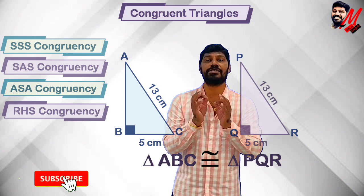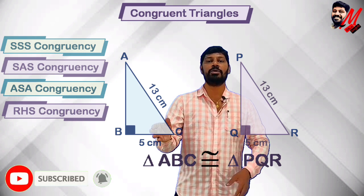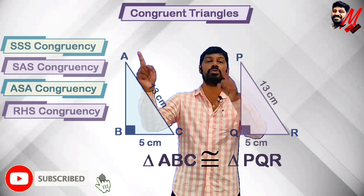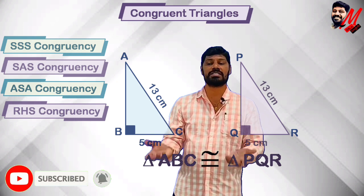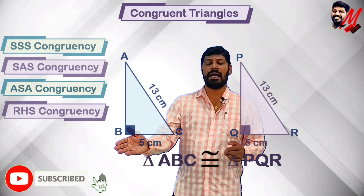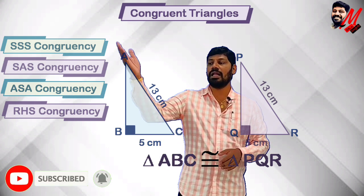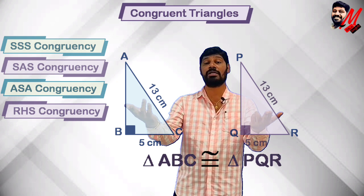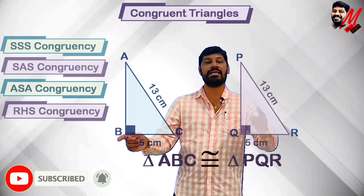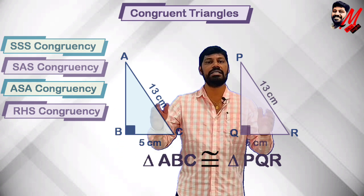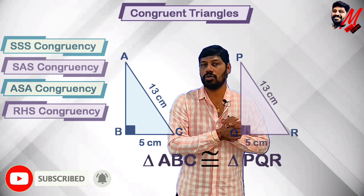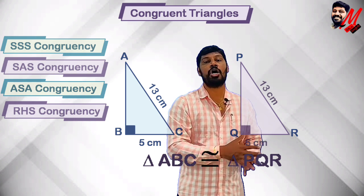RHS congruence is especially for right triangles. Suppose angle B equals 90 degrees and angle Q equals 90 degrees; the hypotenuse AC equals PR, say both equal 13; and one side AB equals PQ, say both equal 5. So by right angle-hypotenuse-side (RHS) congruency, these two triangles are congruent.